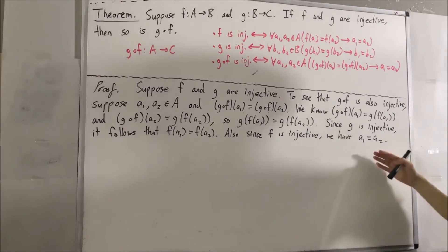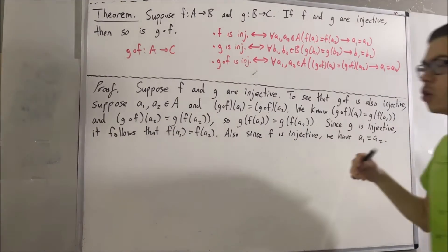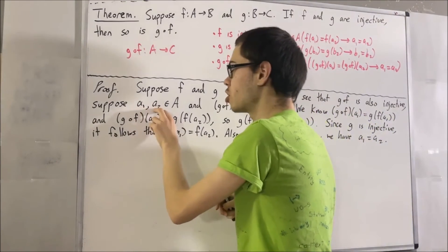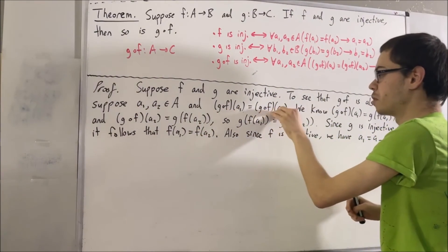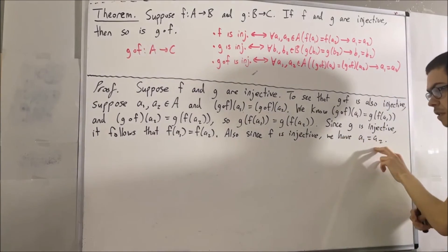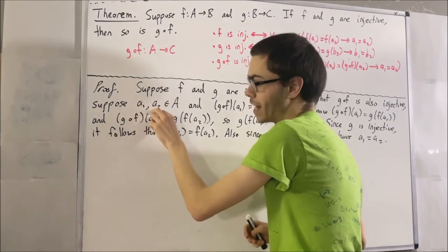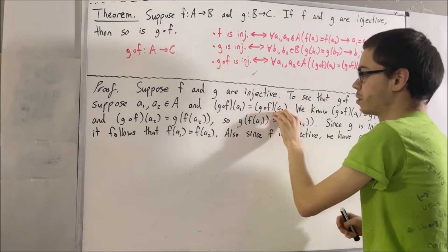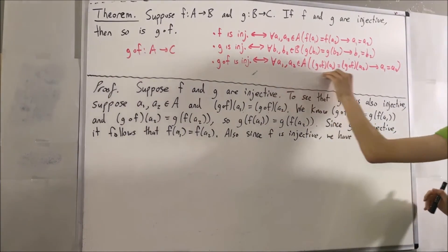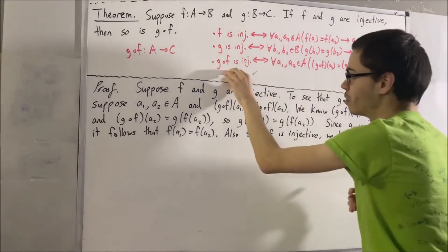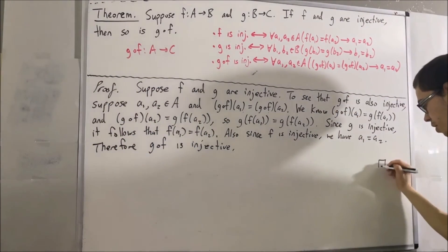This proves that g compose f is also injective. We started with two arbitrary elements a1 and a2 of A, and showed that if g compose f of a1 equals g compose f of a2, then a1 equals a2. Since a1 and a2 were arbitrary, this holds for every two elements in A — which is precisely the definition of g compose f being injective. So this completes the proof.